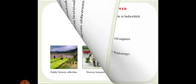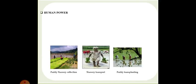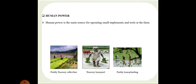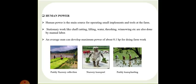You can observe here that there is paddy nursery collections, nursery transportation and paddy transplantation. All are done with the help of humans. Human power is a very important source of power. It is the main source of operating small implements and tools at the farms. Stationary work like chaff cutting, lifting, water threshing, winnowing are done by manual labor. An average man can develop maximum power of about 0.1 HP for doing farm work.